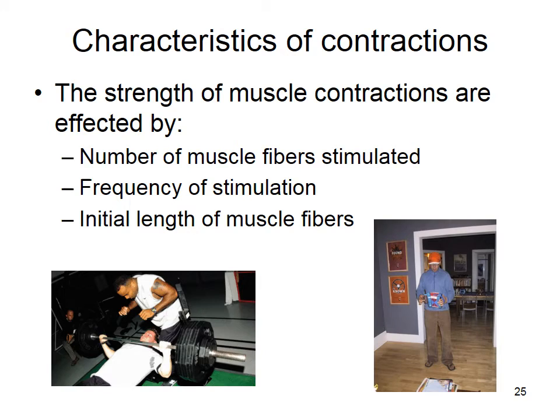We can modulate contraction strength. One major way is increasing the number of muscle fibers stimulated. Motor neurons are organized into motor units — a motor unit is a motor neuron and all the muscle fibers it innervates. For stronger contraction you recruit more motor units. Bench pressing a heavy weight involves far more muscle fibers than playing a small accordion.